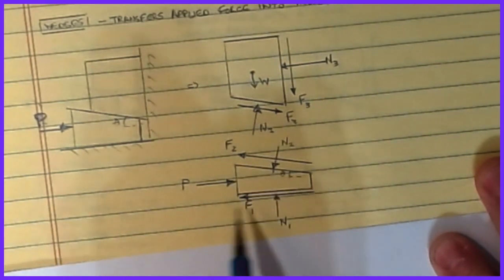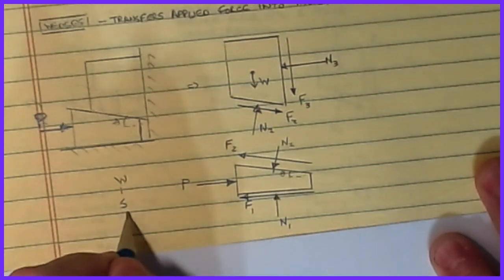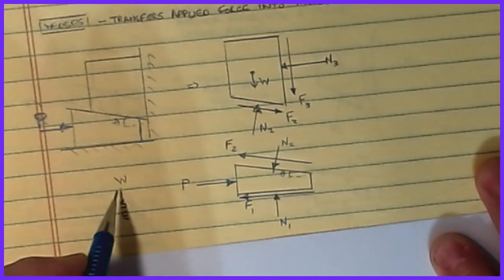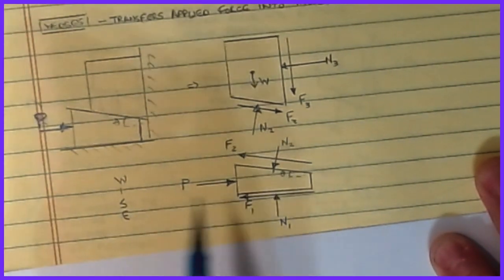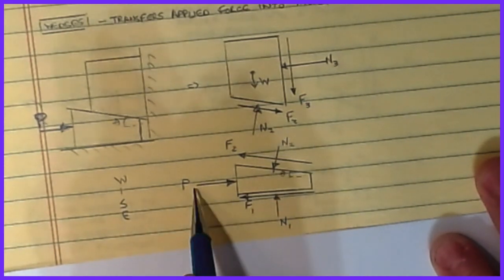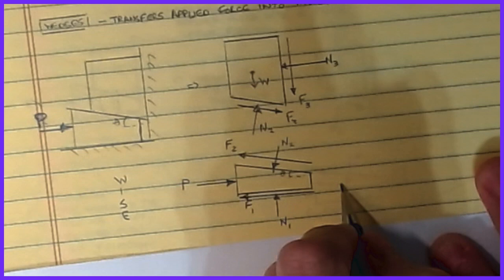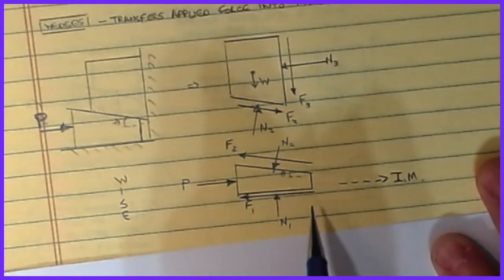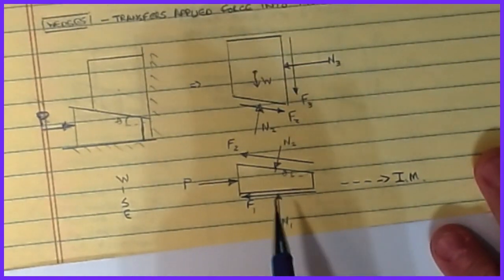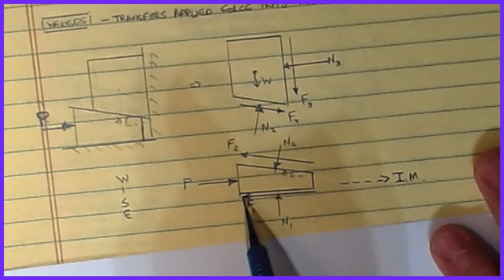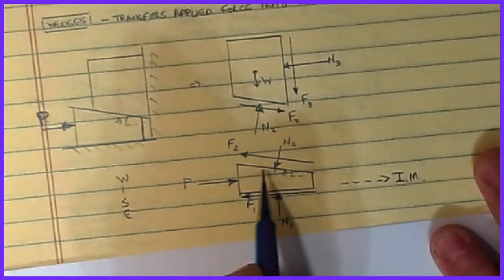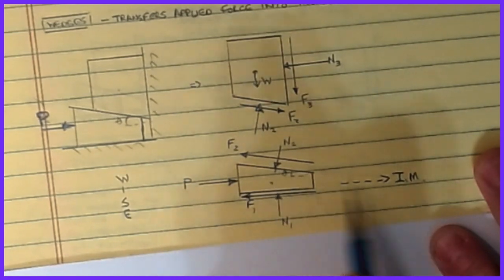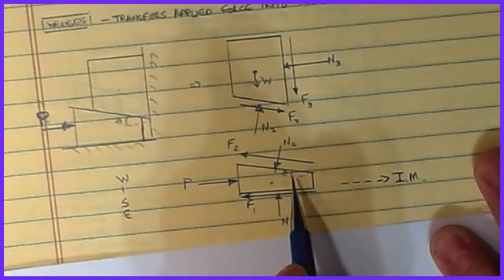Drawing the wedge free body diagram: W is the weight, I represents internal forces revealed by separating the objects. As I push this block in, its impending motion is in that direction. Friction always opposes the impending motion, so we have two friction planes — one at the bottom of the wedge sitting on the surface, and another at the interface between the wedge and the block above.